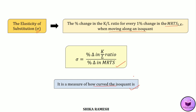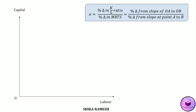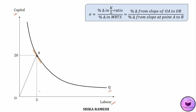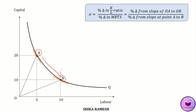Let's see the elasticity of substitution with the help of a diagram. On the x-axis, labor is measured and on the y-axis, capital is measured. We have an isoquant here, represented by Q. At point A, it can be observed that Q level of output is produced by using 5 units of labor and 20 units of capital, whereas at point B, the same Q level of output is produced by using 10 units of labor and 10 units of capital. If a firm producing Q level of output using the factor combination at point A is to move towards point B, the firm's ease of substitutability of the factor inputs can be measured using the elasticity of substitution.